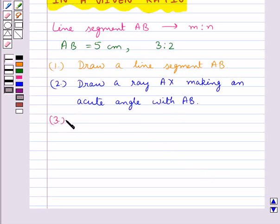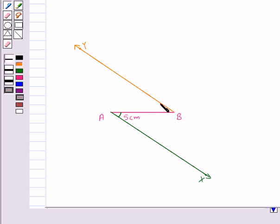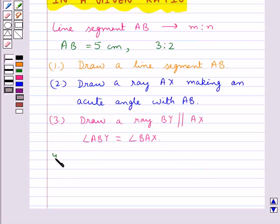Next, we draw a ray BY parallel to the ray AX in which we get angle ABY to be equal to angle BAX. This is the ray BY and this angle is equal to this angle.